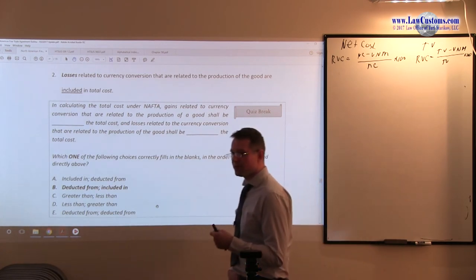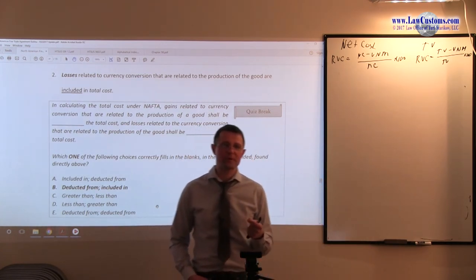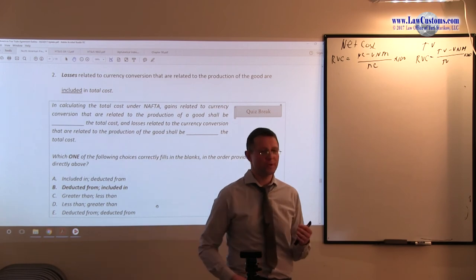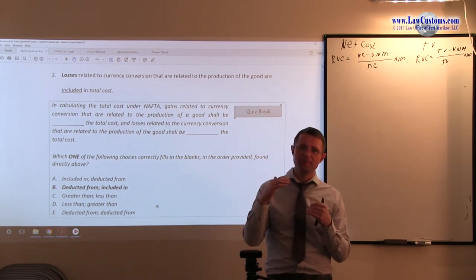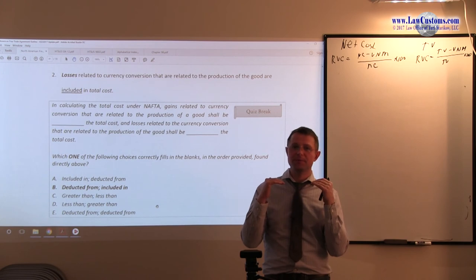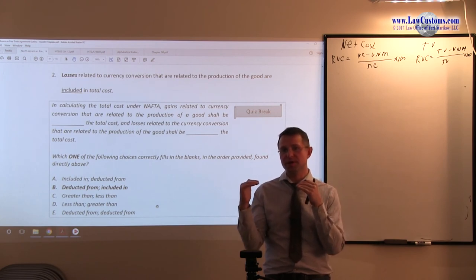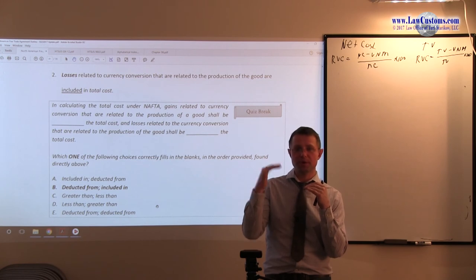we talked about adjusted FOB and if certain transportation costs are included, then it has to be adjusted downward, and if they are excluded, it has to be adjusted upward.